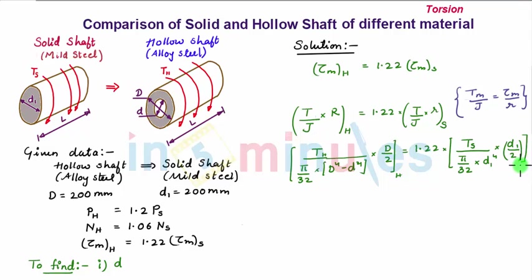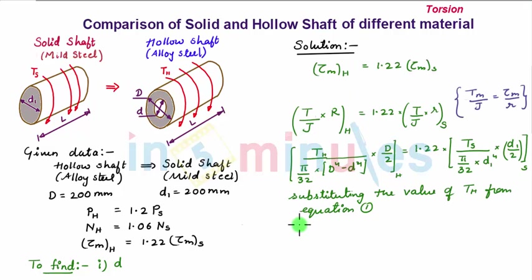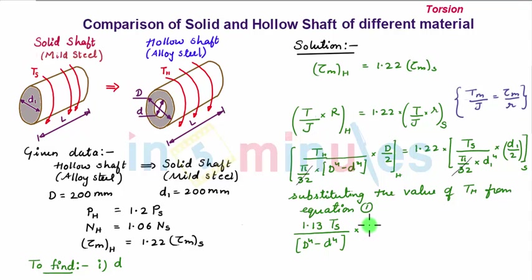Substituting T_H = 1.13 T_S from Equation 1 into the shear stress equation. The π/32 terms cancel on both sides, giving: 1.13 T_S / [(D⁴ − d⁴) × (D/2)] = 1.22 × T_S / [D1⁴ × (D1/2)].